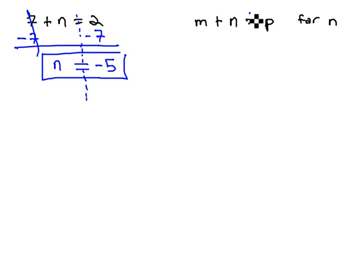When we're solving a formula like the one on the right, m plus n equals p, we're solving for n, we want that n to be alone.